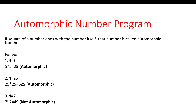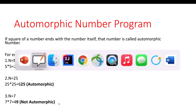Let's first understand what an automorphic number is. If the square of any number ends with the number itself, then that number is called an automorphic number. For example, 5 squared is 25, which ends with 5, so 5 is automorphic. Similarly, 25 squared ends with 25, so 25 is also automorphic. However, 7 squared is 49, which ends with 9 instead of 7, so 7 is not an automorphic number.